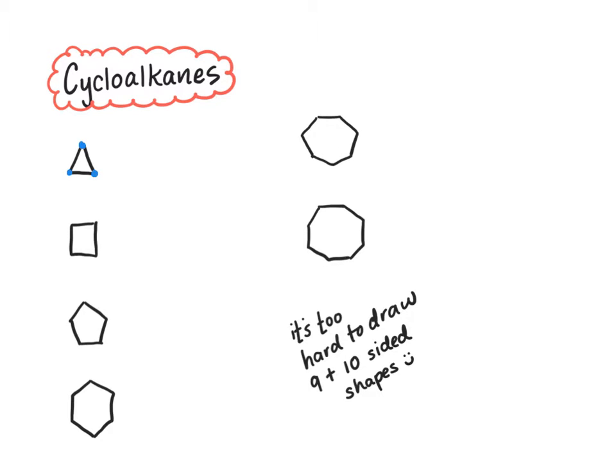So for example the triangle structure has three carbons and when we name it we call this cyclopropane. So it's the same parent name, three carbons, we just add the word cyclo in front.